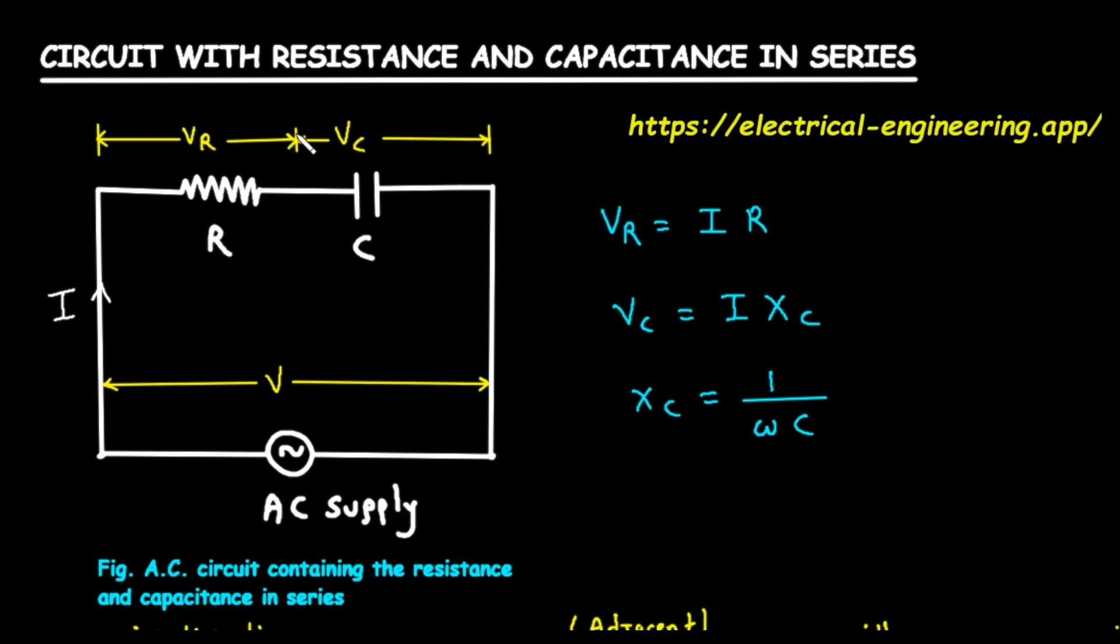That's a circuit containing a resistor and a capacitor connected in a single line. By the end of this, you'll understand how these two components interact, how voltage and current behave, and how we calculate important values like impedance and power. Let's get started.